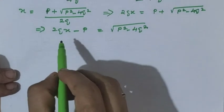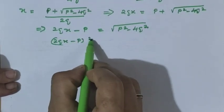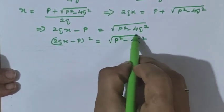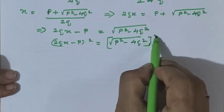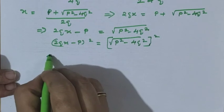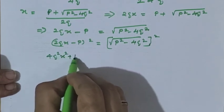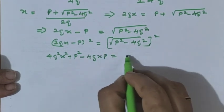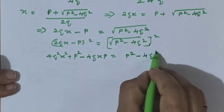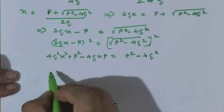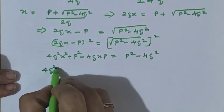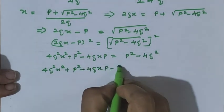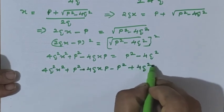For removing the root, we square both sides: 2qx minus p whole square equals root of p squared minus 4q squared whole square. This is a minus b whole square. Expanding: 4q squared x squared plus p squared minus 4qxp equals p squared minus 4q squared. Bringing all terms to this side: 4q squared x squared plus p squared minus 4qxp minus p squared plus 4q squared equals 0.